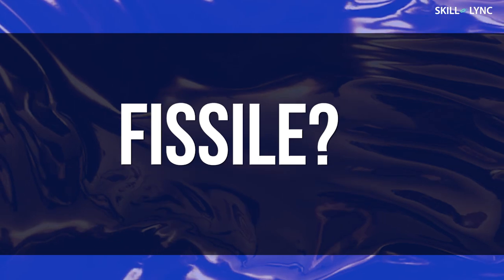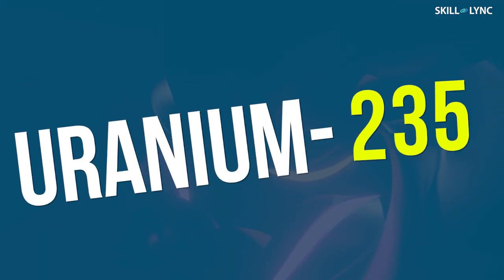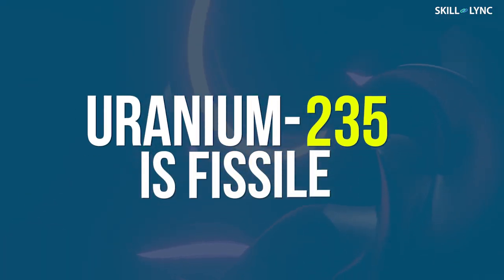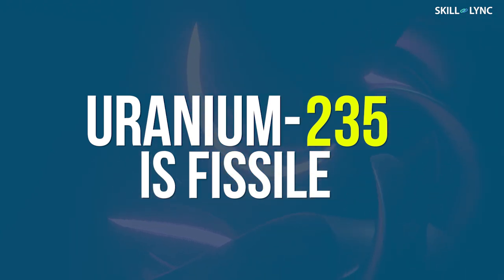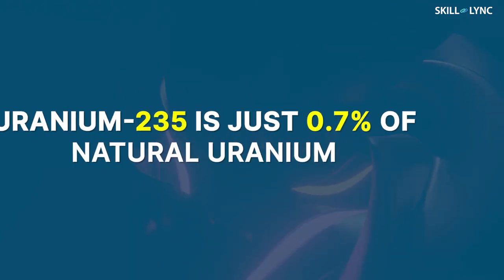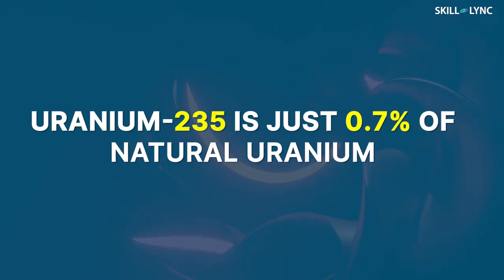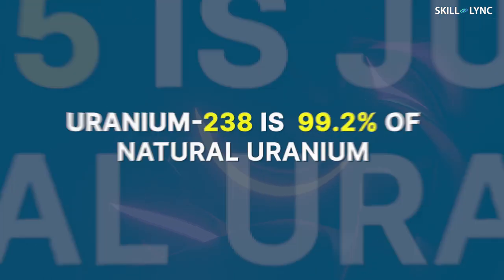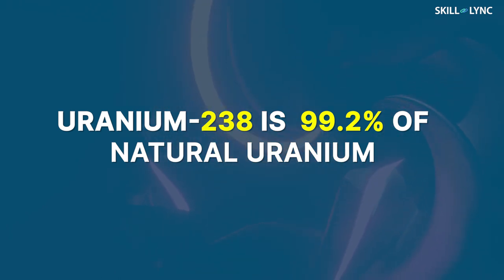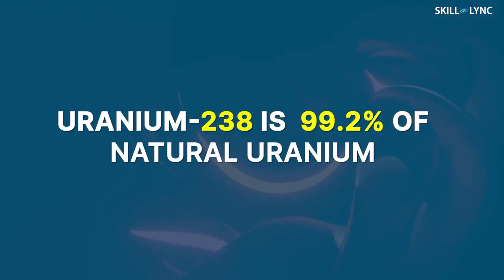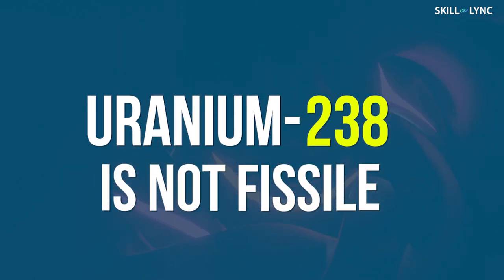Wonder what the term fissile means? As we have seen in previous videos, uranium-235 is fissile, which means it is capable of sustaining a nuclear fission chain reaction. But the abundance of this isotope in natural uranium is just 0.7%. Uranium-238, on the other hand, is about 99.2% of the total natural uranium. Despite the abundance, it is not fissile.